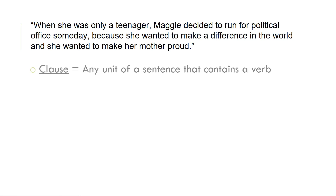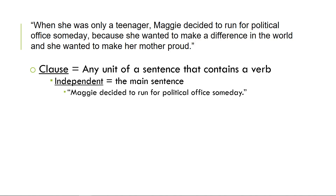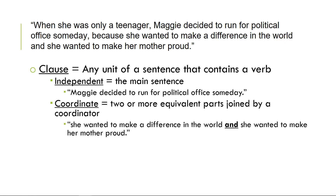Now, what about a clause? A clause is any unit of the sentence that contains a conjugated verb — Greek is a little more slippery than English but we'll see that when we get to it. The independent clause, the main sentence, would be everything from 'Maggie to someday' — that is the unit that must be there. You can coordinate clauses with 'and,' 'or,' 'yet,' 'but' — any word that makes the units on either side of it coordinated and parallel, equal in status. So 'making a difference' and 'wanting to make her mother proud' are both on the same level and are therefore coordinated clauses.